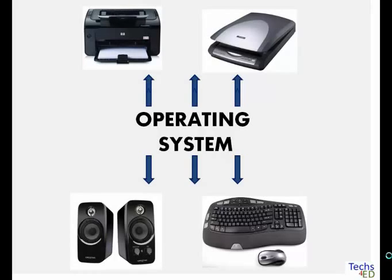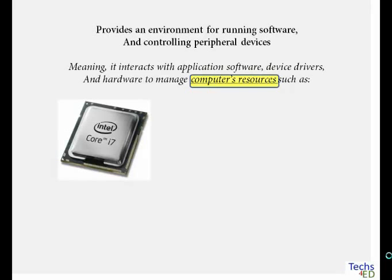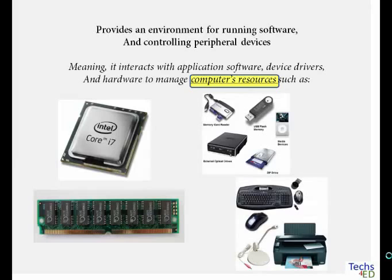Here's a list of all the tasks that the operating system does for your computer: provides an environment for running software and controlling peripheral devices, meaning it interacts with application software, device drivers, and hardware to manage computer resources such as processor, RAM, storage devices, and peripheral devices.